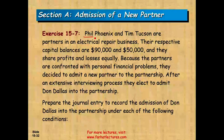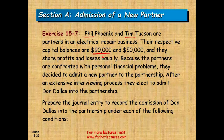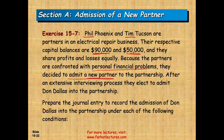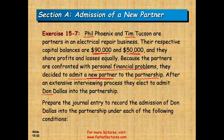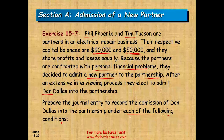Let's work a simple example, then build up. Phil and Tim are partners in an electrical repair business. Phil's capital balance is $90,000 and Tim's is $50,000. They share profits and losses equally. Because the partners are confronted with personal financial problems, they decided to admit a new partner, Don. Prepare the journal entry for the admission of Don under each of the following conditions.